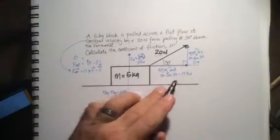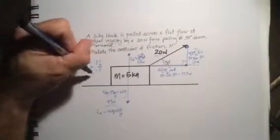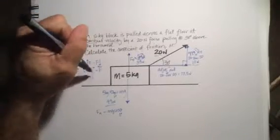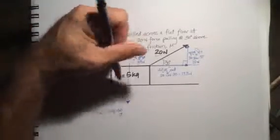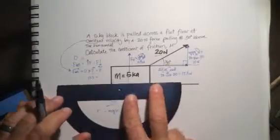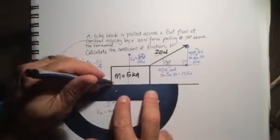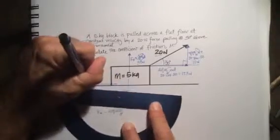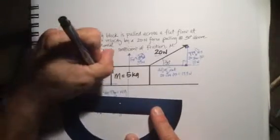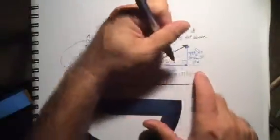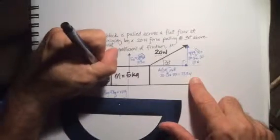Now, 17.3 newtons is our applied force. That's the right, 17.3 is the applied force. And that's equal to the opposing force, which would be our friction. And that's applied right about here where the two surfaces meet. So, friction force is equal to applied force, which is 17.3 newtons.